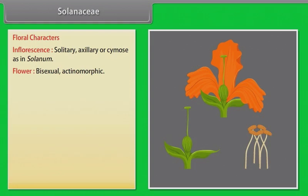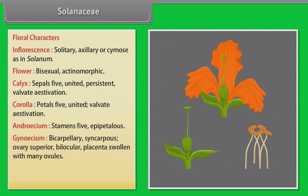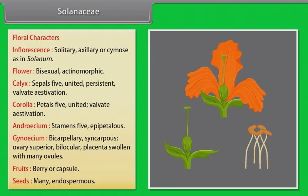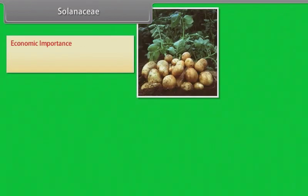Floral characters of Solanaceae: inflorescence solitary axillary or cymose as in Solanum; flower bisexual, actinomorphic; calyx: sepals 5, united, persistent, valvate aestivation; corolla: petals 5, united, valvate aestivation; androecium: stamens 5, epipetalous; gynoecium: bicarpellary, syncarpous, ovary superior, bilocular, placenta swollen with many ovules; fruit: berry or capsule; seeds: many, endospermous.